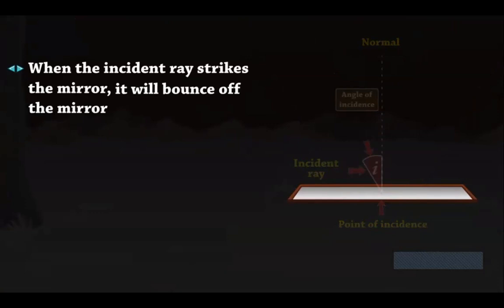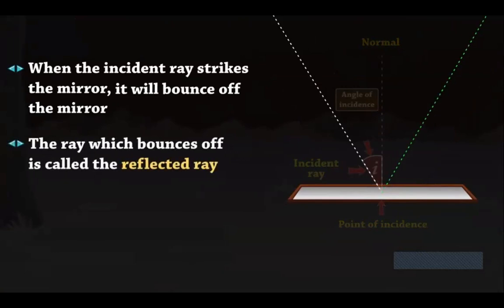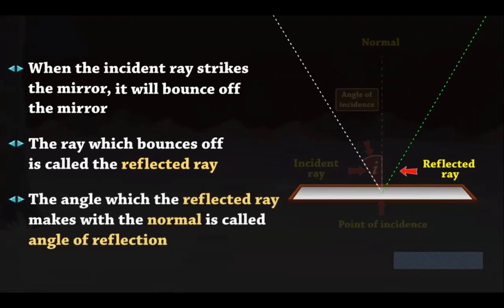When the incident ray strikes the mirror, it will bounce off the mirror. The ray which bounces off is called the reflected ray. The angle which the reflected ray makes with the normal is called the angle of reflection.